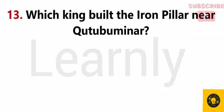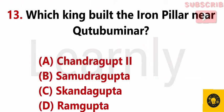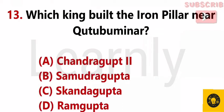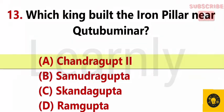Which king built the iron pillar near Qutub Minar? Answer A. Chandragupta II.